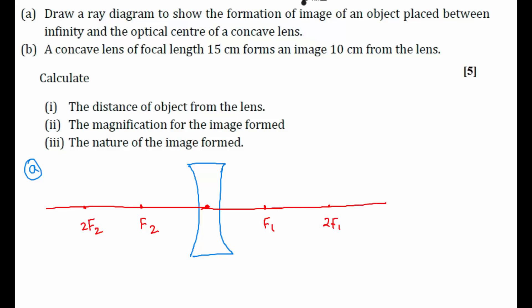Now what is being asked? Draw a ray diagram to show the image formation of an object placed between infinity and the optical center. So this will be our optical center — the pole. Infinity will be somewhere here. So the object can be placed anywhere between infinity and the pole. Let's keep an object here and see what will happen.